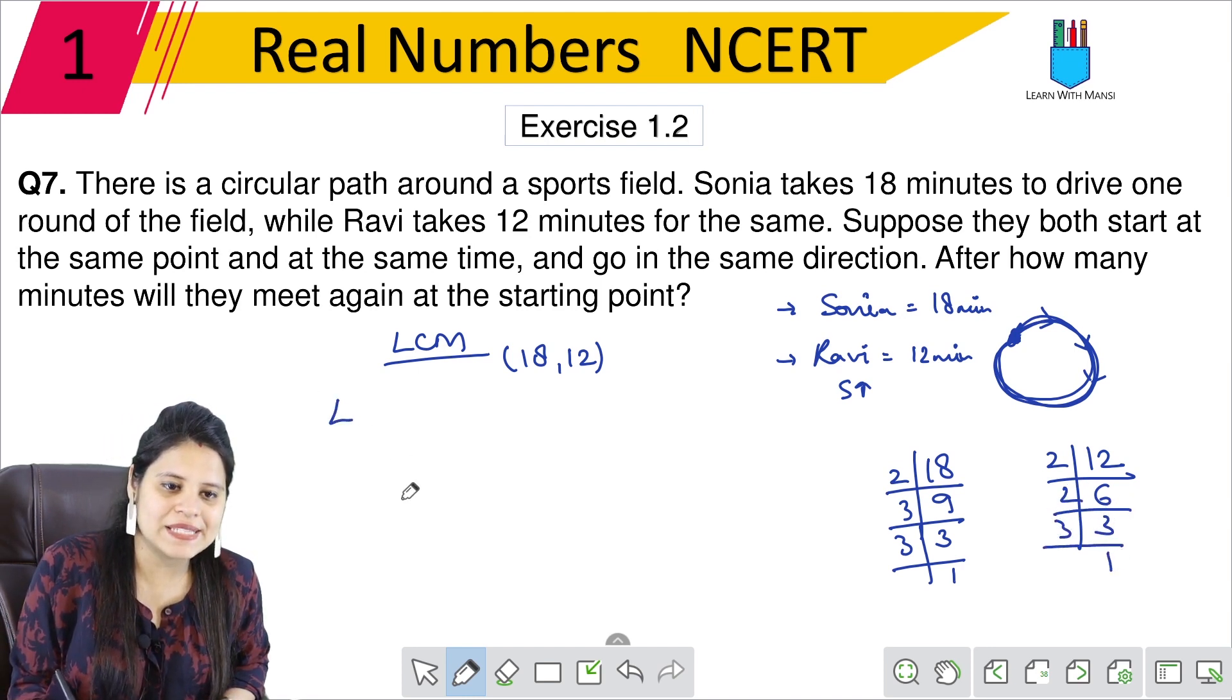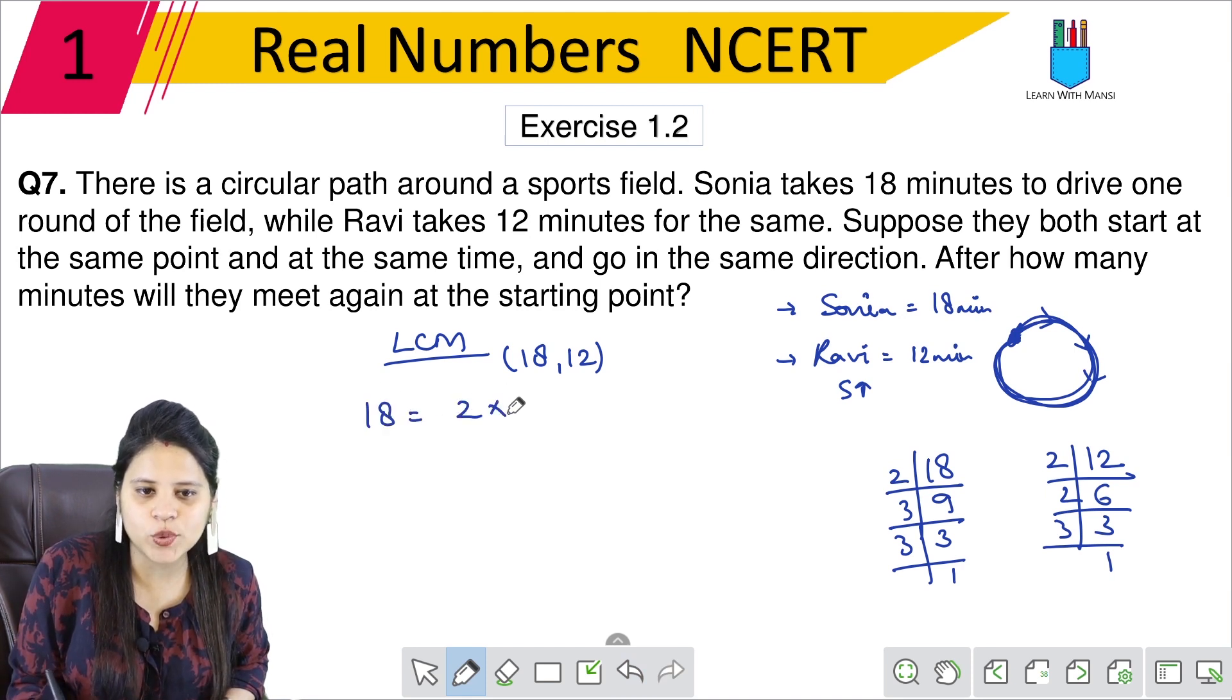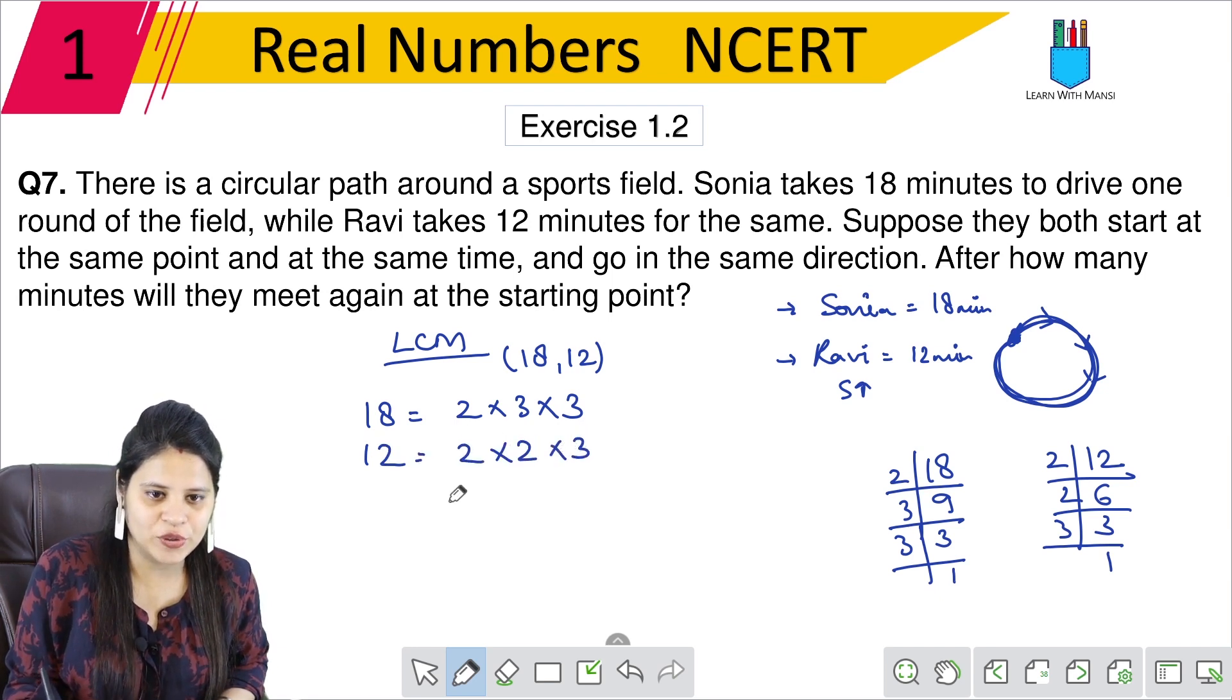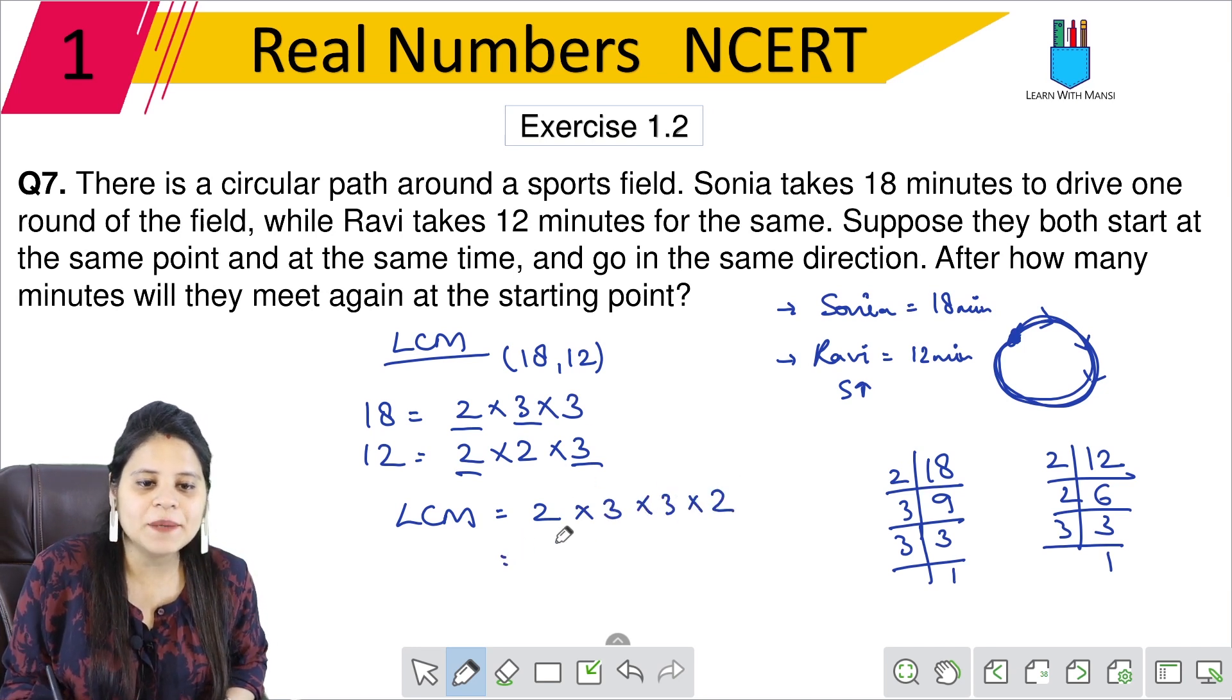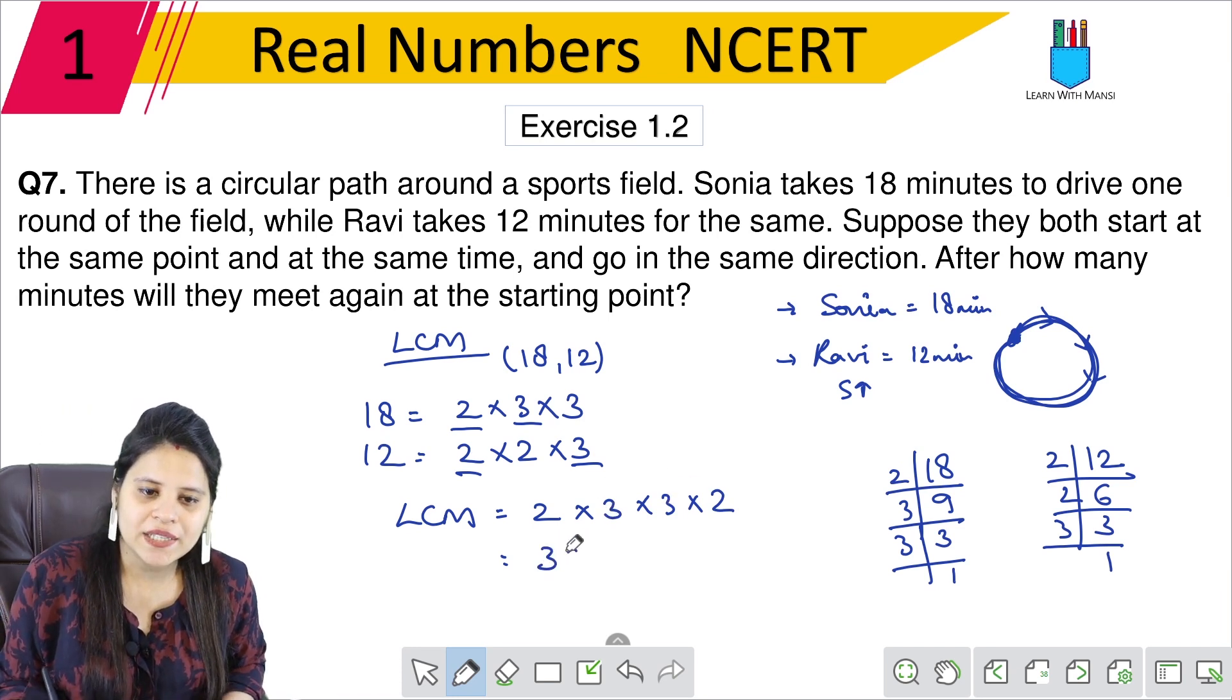So first, we will write the LCM. 18's factors: 2 × 3 × 3. And 12's factors: 2 × 2 × 3. So for LCM, what is common? 2 is common, we will take it once. 3 is common, we will take it once. Then the remaining factors. We will multiply: 3 × 2 is 6, 6 × 3 is 18, 18 × 2 is 36.